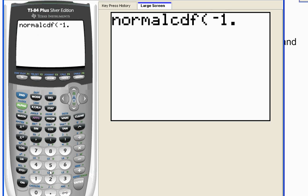Negative 1.5, comma, positive 1.25. Close my parentheses. And when I hit enter...